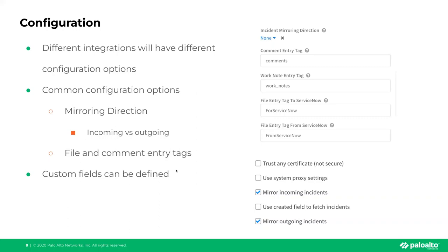For files as well, you add an entry tag to tell the system to pull from or push to ServiceNow. Custom fields can also be defined. By default, not everything may be coming over — perhaps because you created custom fields. If there are custom fields, you need to make sure those are defined. To show the difference, the top screenshot is ServiceNow and the bottom is Jira — slightly different configuration but both have mirror incoming, mirror outgoing, and the basic fields.